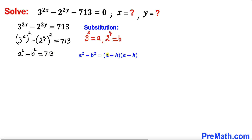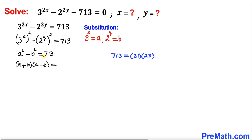Now let's recall the famous difference of two squares identity: a² minus b² equals (a+b)(a-b). On the right hand side, 713 can be factored into 31 times 23, where both 31 and 23 are prime numbers. So the right hand side is written as 31 times 23.